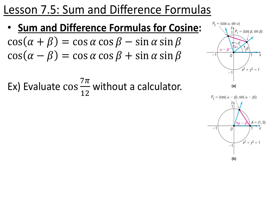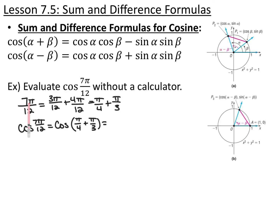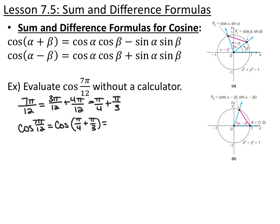For example, if we want to evaluate cosine of 7π/12, that's not one of the angles we have memorized on the unit circle. But we can write it as a sum or difference of angles that we do know. So 7π/12 is the same as 3π/12 plus 4π/12, which is π/4 plus π/3. We can rewrite cosine of 7π/12 as the cosine of π/4 plus π/3, and now we can apply the cosine sum formula.